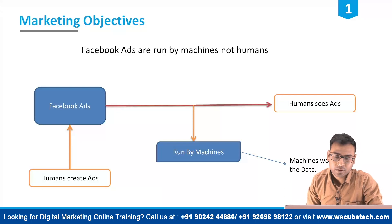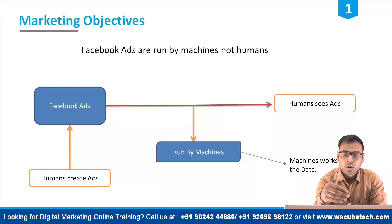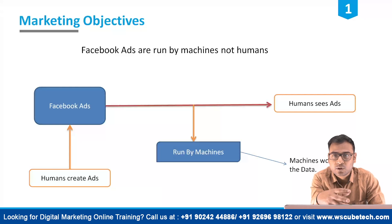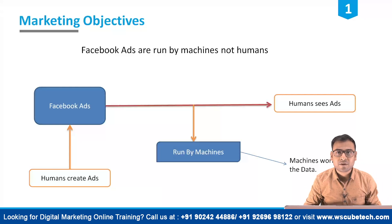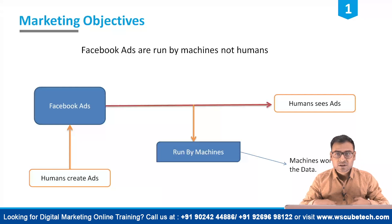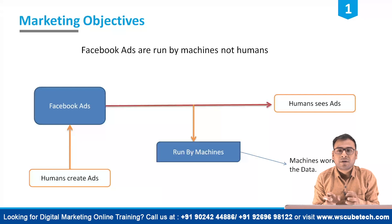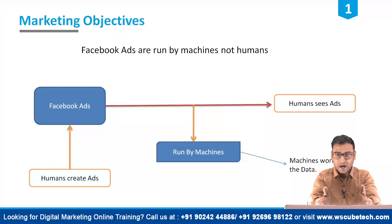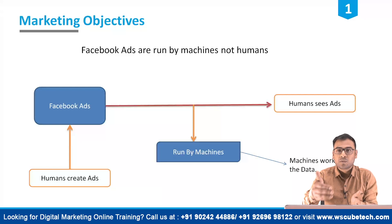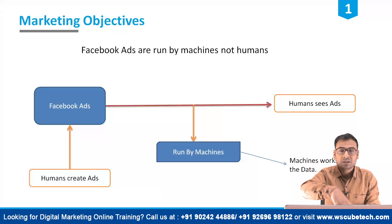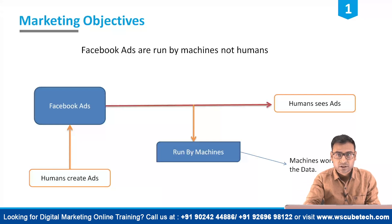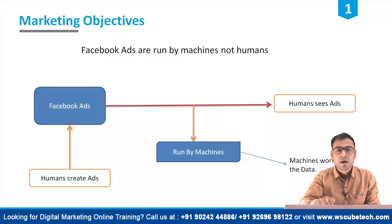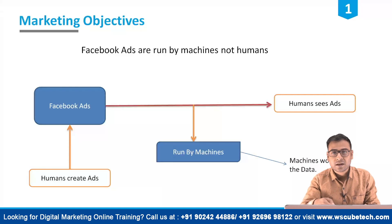Facebook analyzes this data and accordingly pushes ads to users. When we create our campaign, it is not us who drive Facebook ads or show them to users. It is Facebook's artificial intelligence system — governed by algorithms — that places our ads within the Facebook ads platform.